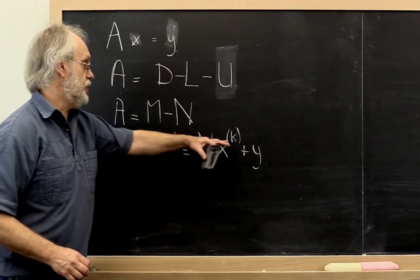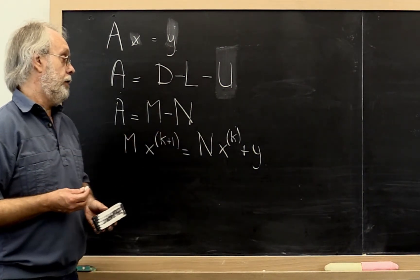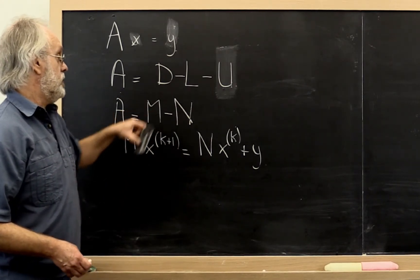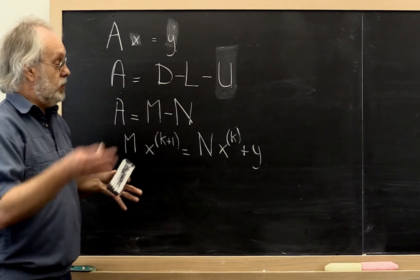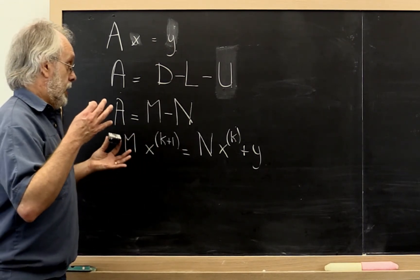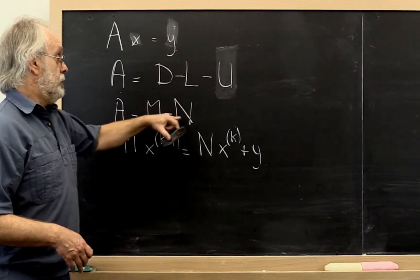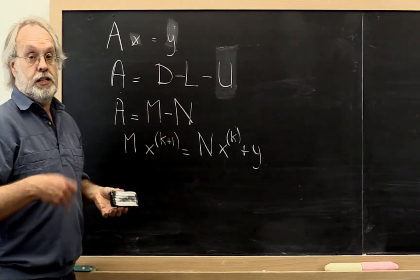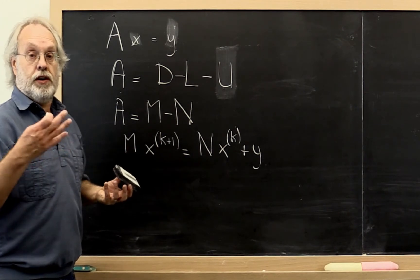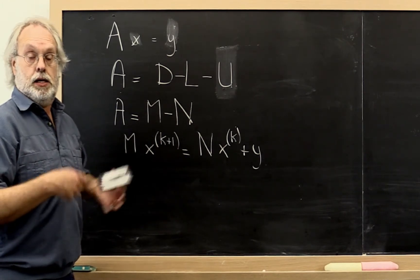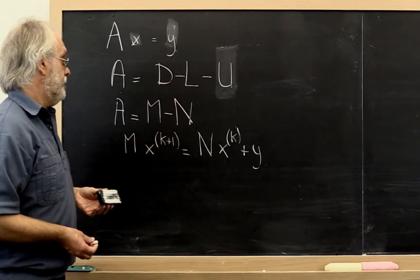And this was the general formulation of the splitting method where for the Jacobi iteration M was the diagonal, N was everything else, the negative of everything else. For Gauss-Seidel, M was the lower triangular matrix, N was the transpose of the strictly lower triangle part, except negated.